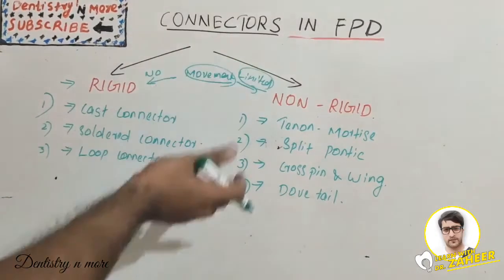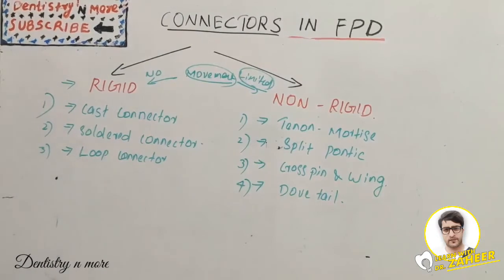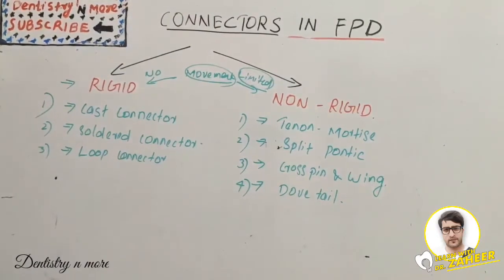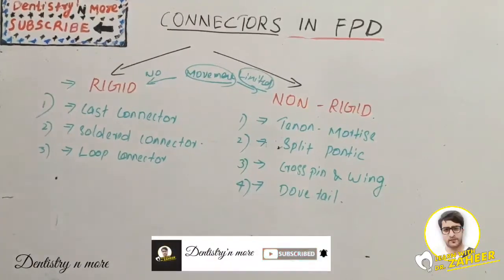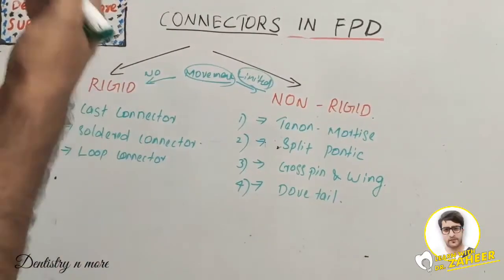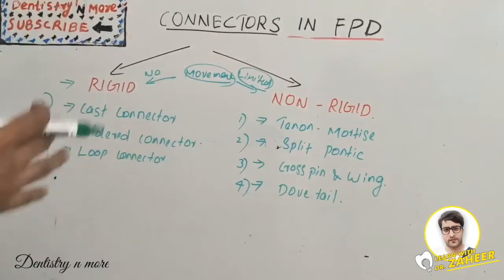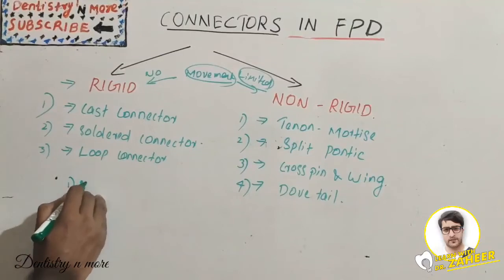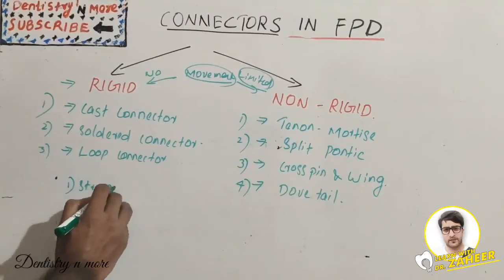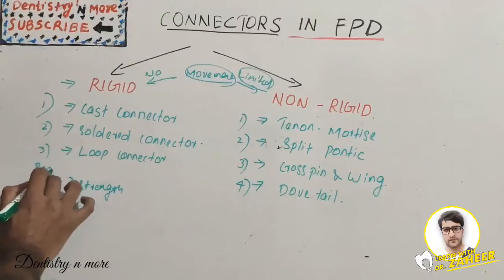Before discussing each type, let's learn the ideal requirements of a connector. First, a connector should be wide enough to provide strength to the FPD unit, but not so wide as to hamper oral hygiene maintenance. So it should not disturb oral hygiene maintenance but should provide adequate strength to the unit.